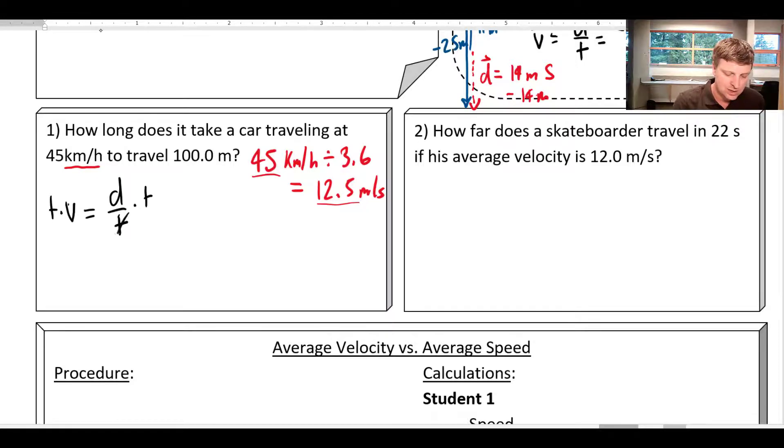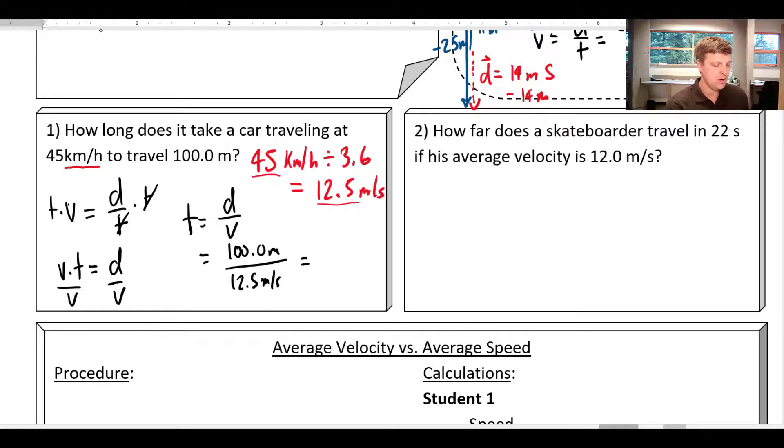So I'm going to first multiply both sides by T, which cancels it out here. And I get V times T equals D. And then I'm going to divide by V and divide by V. And I get T equals D over V. And so a distance of 100 meters at a rate of 12.5 meters per second is going to give me 100 divided by 12.5 is going to give me 8.